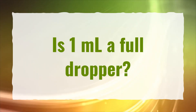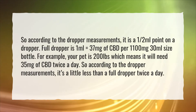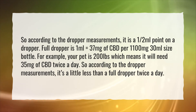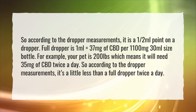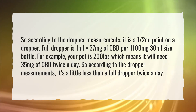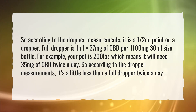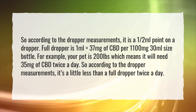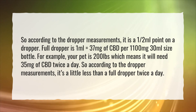Is 1 ml a full dropper? According to the dropper measurements, it is a half a milliliter point on a dropper. A full dropper is 1 ml, which equals 37 mg of CBD per 1,100 mg 30 ml size bottle. For example, if your pet is 200 lbs, it will need 35 mg of CBD twice a day — that's a little less than a full dropper twice a day.